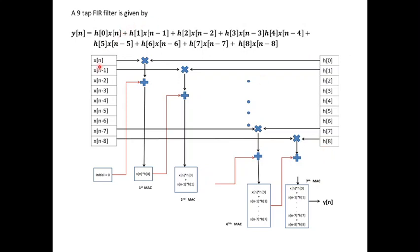As per the equation, the first input sample x(n) and h(0) are multiplied, and then the initial accumulator value equals 0. This multiplied product is added, which is nothing but the output of the first MAC, which is x(n) into h(0).